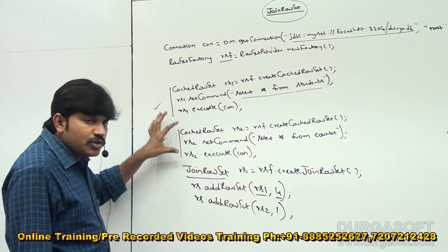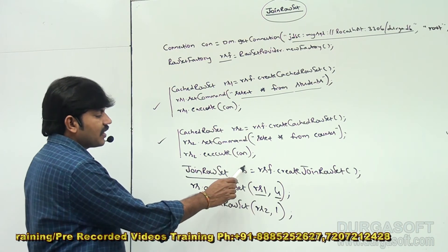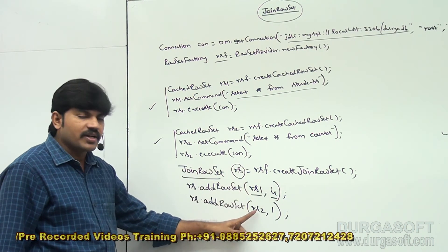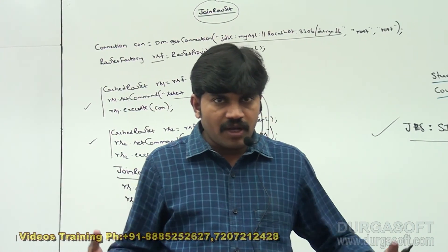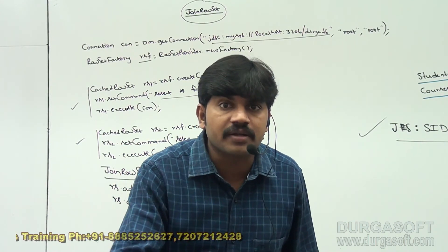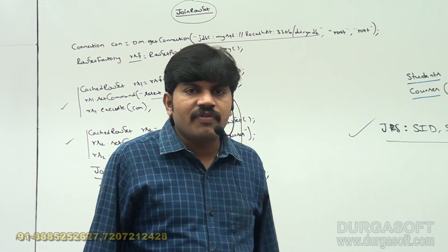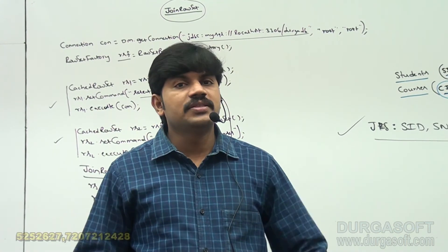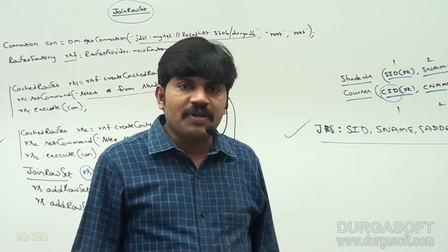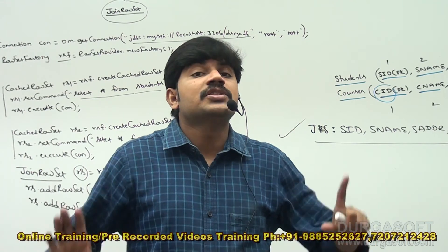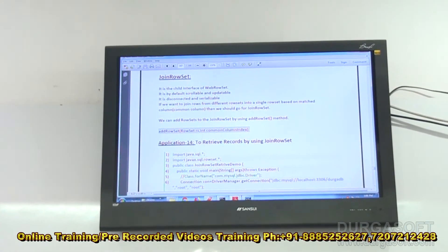In our example, we created two rowsets and joined both into a single rowset. 'rs' is the JoinRowSet that contains rs1 and rs2. For such requirements, we go for JoinRowSet. If you have multiple rowsets and want to combine them into a single rowset, use JoinRowSet. This JoinRowSet is the child interface of WebRowSet — you can also publish this data to an XML file and read data from XML.